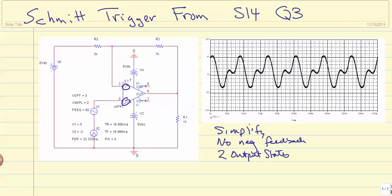In this case, when V plus is greater than V minus, V out will equal 9 volts. Second case, when V plus is less than V minus, V out will equal minus 9 volts.